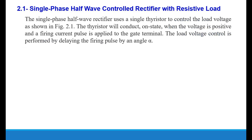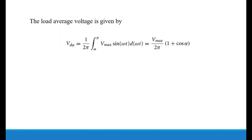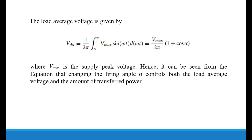First: single phase half wave controlled rectifier. This type of rectifier uses a single thyristor to control the load voltage, as shown in figure 2.1. The thyristor will conduct when the voltage is positive and the firing angle is applied to the gate terminal. Figure 2.1 presents the circuit diagram and the output waveform for the voltage and the current. The average output voltage Vd(alpha) equals Vmax over 2π multiplied by (1 + cos α). From this equation, the output power and voltage can be controlled by changing the firing angle.